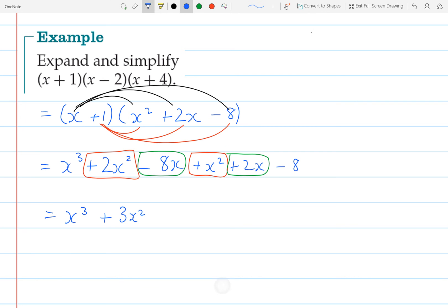And then I have an x term. And there's another x term. So I'll have minus 6x. And then all on its own, at the end, we have a negative 8. So we have minus 8 at the end.